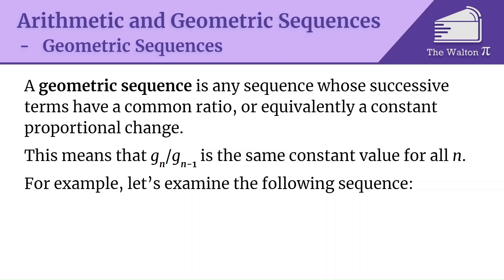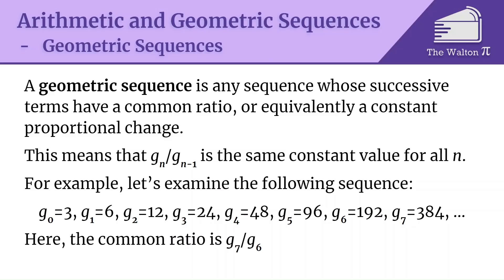For example, let's examine the following sequence: g0 is 3, g1 is 6, g2 is 12, g3 is 24, g4 is 48, g5 is 96, g6 is 192, g7 is 384, and so on. Here the common ratio is g7 divided by g6, which is the same as g6 divided by g5, dot dot dot, g1 divided by g0, which is 6 over 3 or just 2.